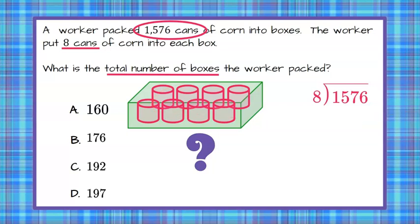So now we just need to divide. We know that eight does not go into one, so we're going to look at the first two digits. Eight goes into 15 one time. One times eight is eight. We're going to subtract. 15 subtract eight is seven.